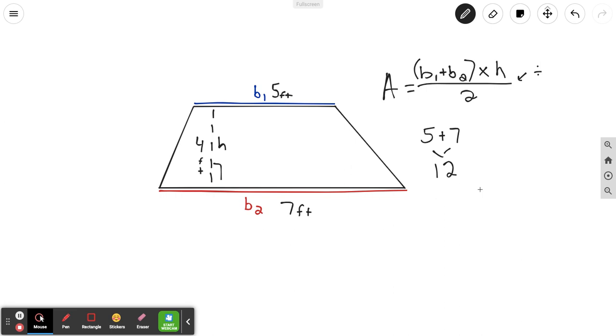Now I'm going to take that 12, and the second part here, according to my formula, is to multiply that by the height. My height is four, so I'm going to do 12 times four. I just kind of like to break it down step by step like this. So 12 times four, that's going to give me 48.